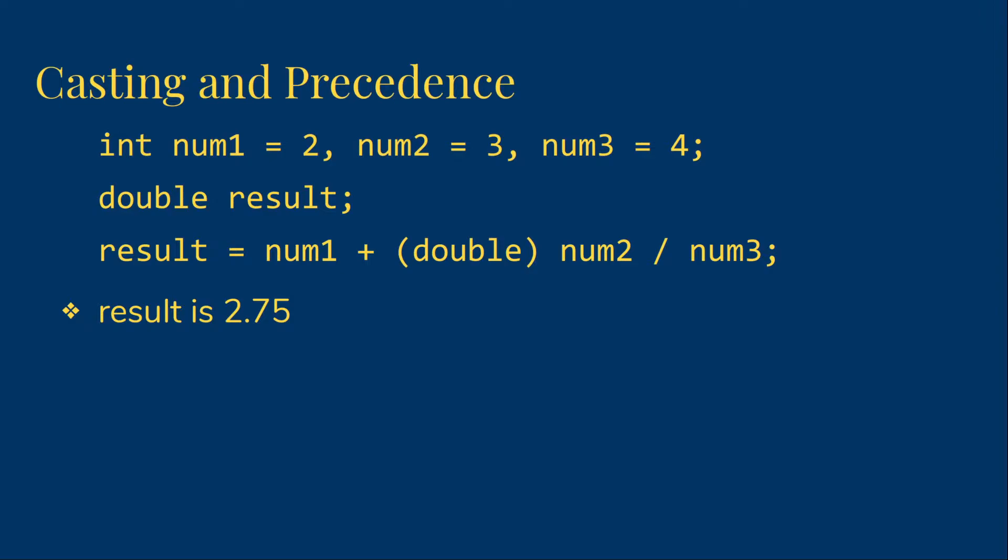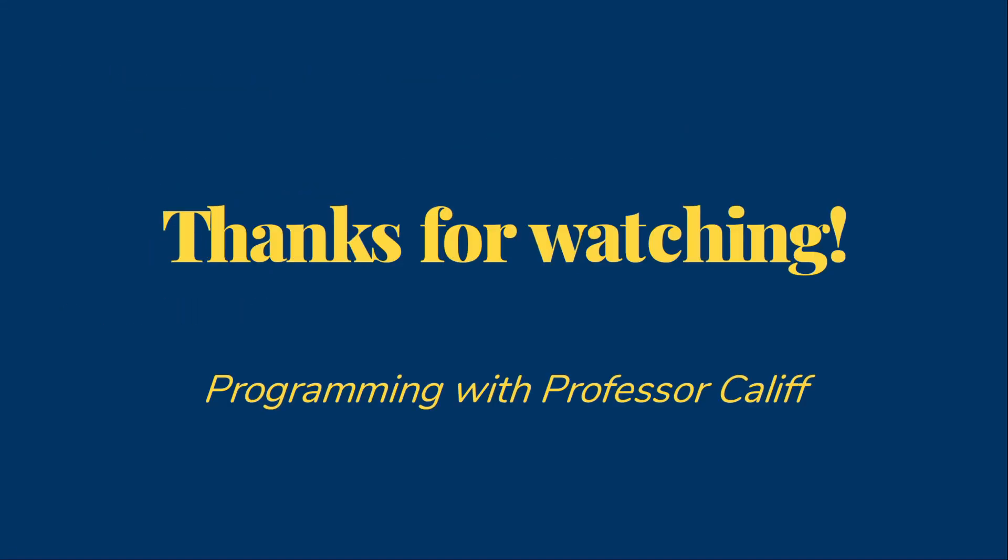One other mistake that people will sometimes make is they put that double onto the numerator, but then add parentheses. Now this puts us back in the same kind of situation we were in in our first example, because we have forced, because of the parentheses, we have forced the division to happen before the cast. And so the division happens on the integers, and then we do the cast. So we'll end up with 2.0 once again.